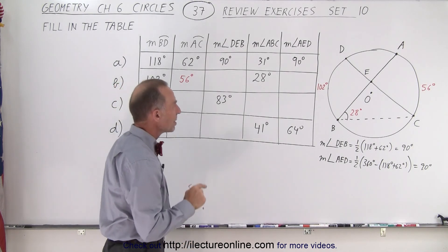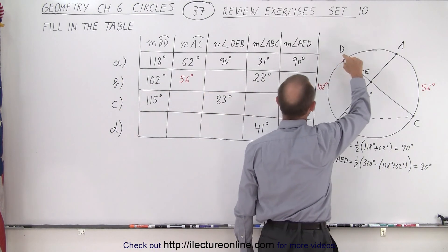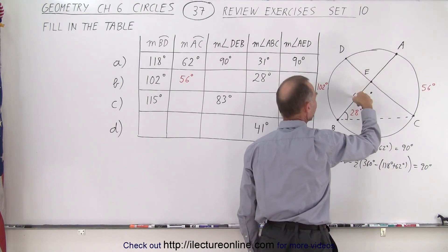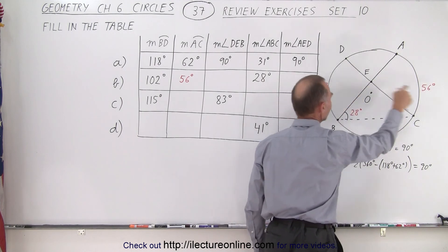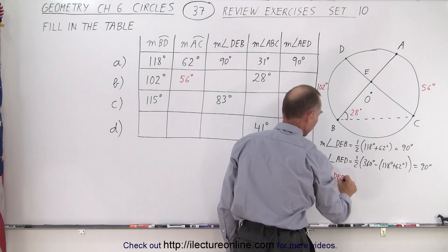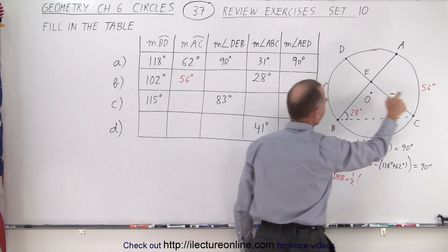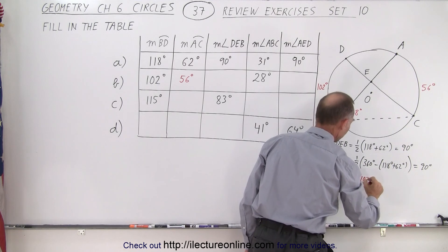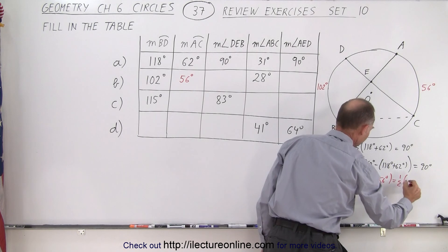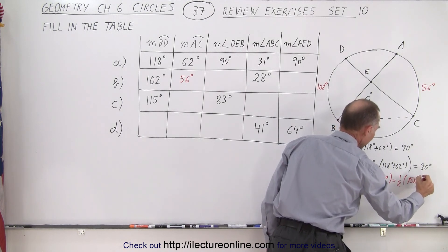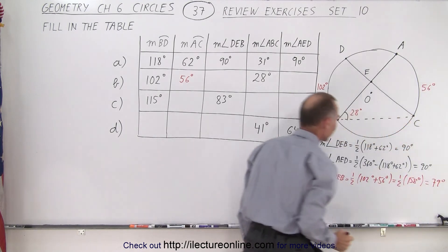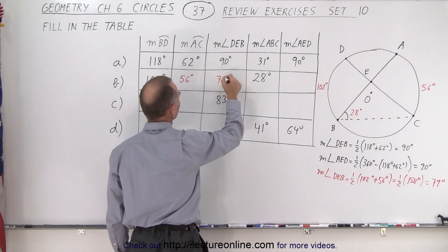Next we're trying to find the measure of angle D-E-B. That's going to be half the sum of these two arc lengths. So the measure of angle D-E-B is equal to one half the sum of 102 degrees plus 56 degrees, which is one half of 158 degrees. Half of that would be 79 degrees, so 79 degrees goes in here.